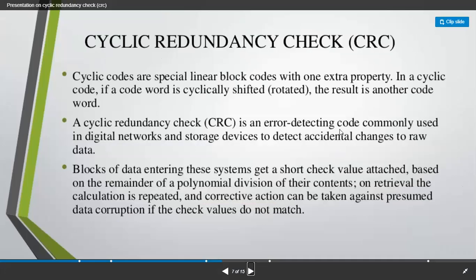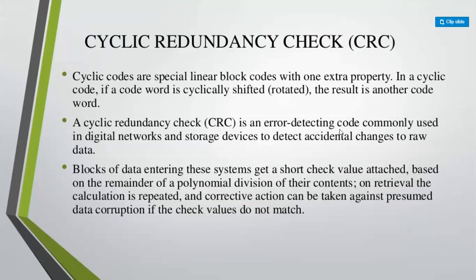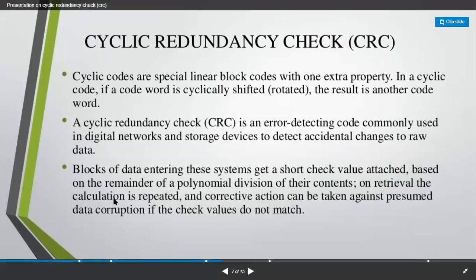The algorithm that checks all the error codes is known as cyclic redundancy check. Cyclic codes are special linear block codes that have some extra property. By using that extra property, if the code word is cyclically shifted or rotated, the result will be another code word. This is why the name cyclic redundancy check is given — because the code word is always getting shifted or rotated according to our error bits of data. This is commonly used for digital networks or any storage devices to find out if any accidental changes happen to raw data.